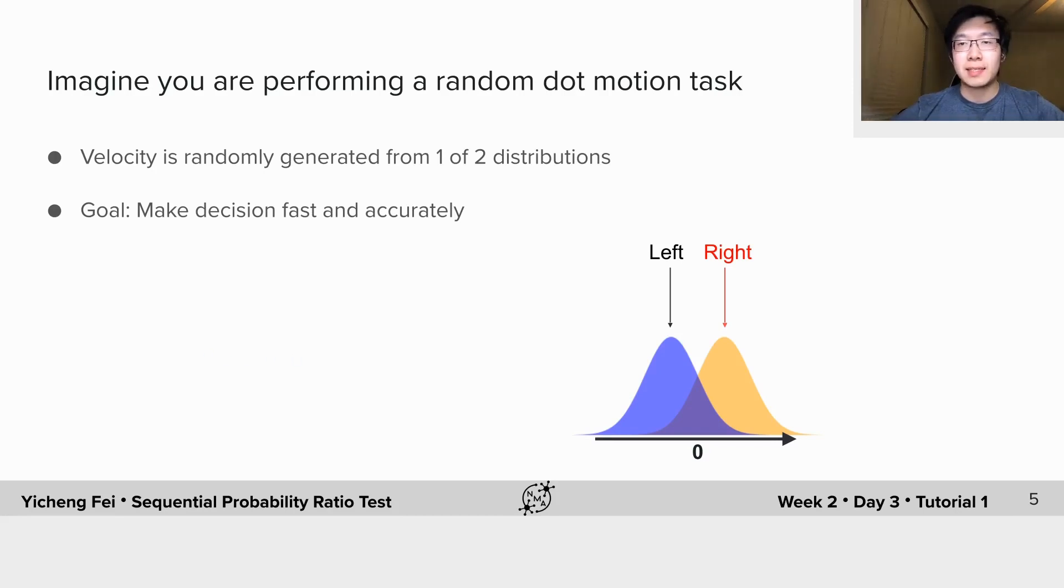Now, let's imagine you are performing a simplified random dot motion test. At every time point, you can observe a moving dot whose velocity is randomly drawn from the same underlying distribution, which is the right Gaussian here. You are able to take as many samples as you want, but your goal is to make fast and accurate estimation of which one of these two is the true data-generating distribution.